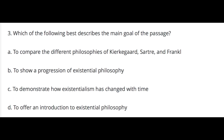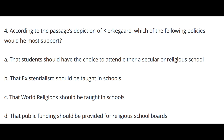Question three: Which of the following best describes the main goal of the passage? A. To compare the different philosophies of Kierkegaard, Sartre, and Frankl. B. To show a progression of existential philosophy. C. To demonstrate how existentialism has changed over time. Question four: According to the passage's depiction of Kierkegaard, which of the following policies would he most support? A. That students should have the choice to attend either a secular or religious school. B. That existentialism should be taught in schools. C. That the world's religions should be taught in schools.